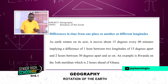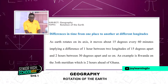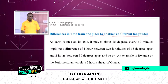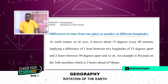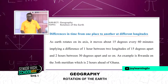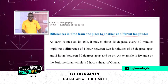Another effect of rotation is differences in time from one place to another at different longitudes. If you are a fan of football, sometimes they'll say they are playing the AFCON in Nigeria, and in Ghana we will be watching it at 3 p.m., but in Nigeria it will be 4 p.m. Why this difference in time? Because Nigeria is ahead of Ghana by one hour.